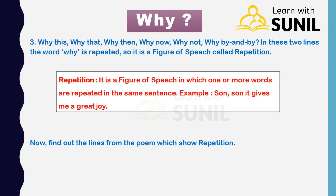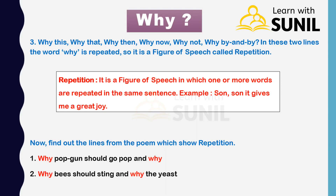Repetition is a figure of speech in which one or more words are repeated in the same sentence. Example: 'Sun, sun, sun, it gives me great joy.' Now find out the lines from the poem which show repetition. First: 'Why pop-gun should go pop off, and why.' Second: 'Why bees should sting, and why the east wind.'